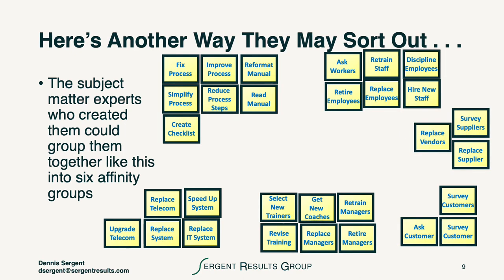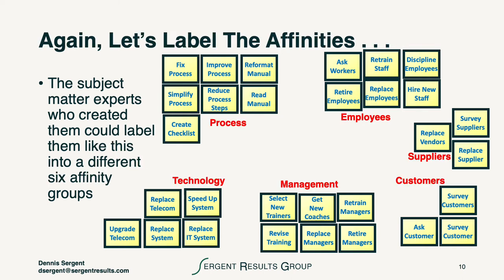We could also think about sorting them another way — a different subject matter expert group might look at them completely differently. The exact same ideas, sorted by a different group of people, might be sorted differently. But we take the group we have and ask them to sort them. We then ask the group to label the affinities. Here we have six affinity groupings: process, technology, management, employees, suppliers, and customers.